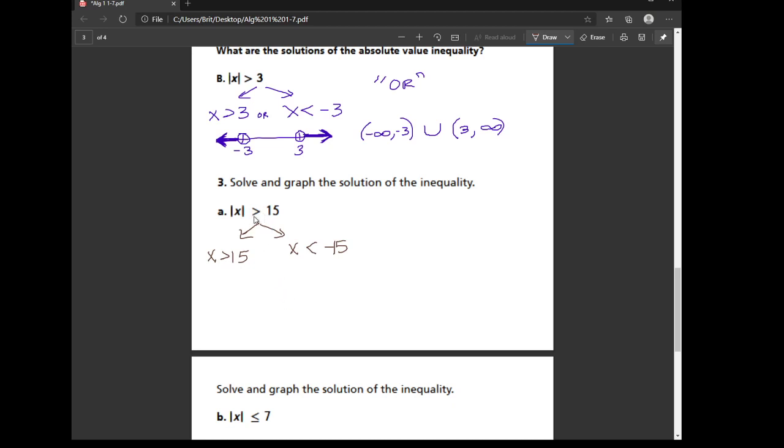So now notice that alligator was originally facing the absolute value. So this is going to be an OR situation that graphs with the arrows pointing out. So x is greater than 15. I'm going to put my circle on 15. It's open because it can't be equal to. And everything greater than 15 goes to the right.